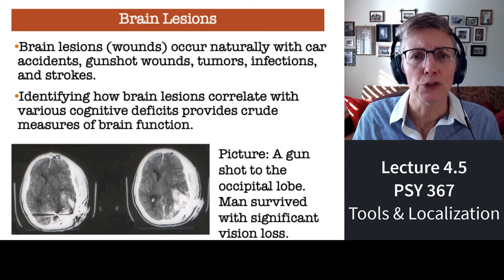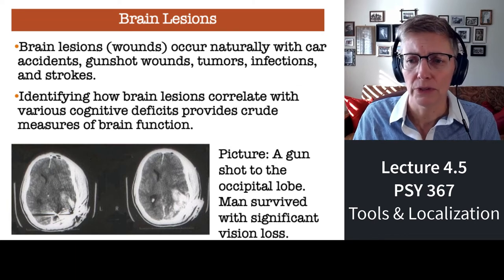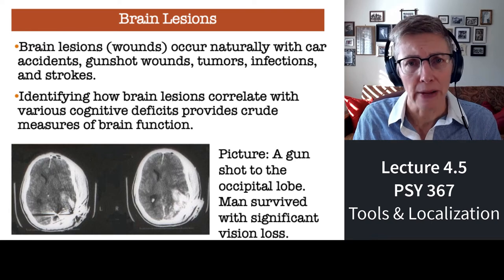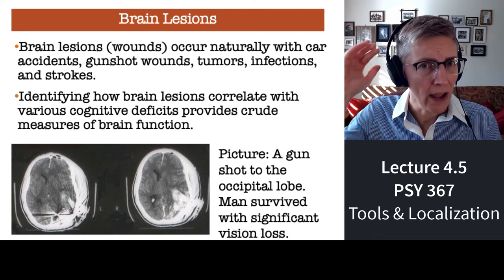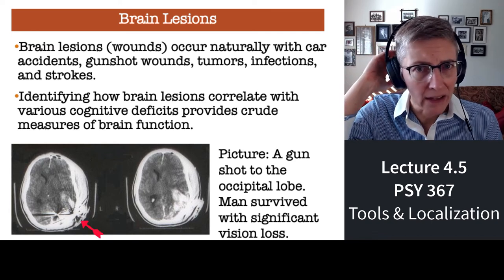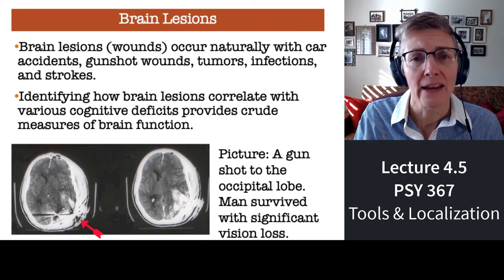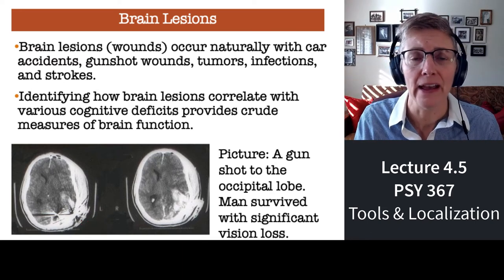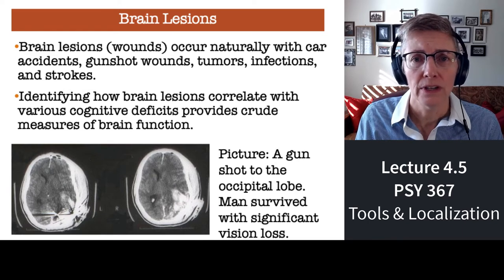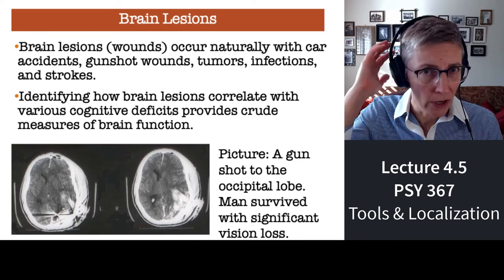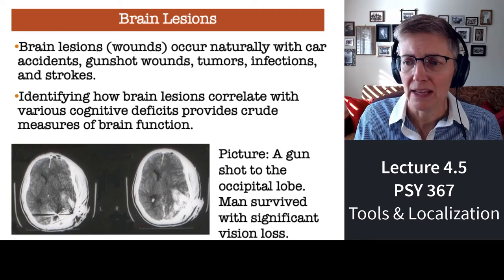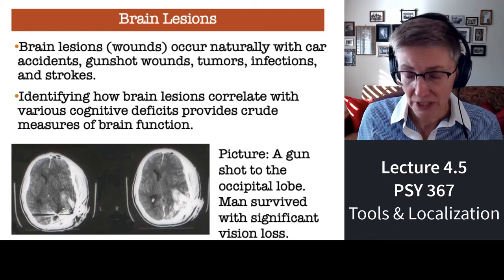In this slide, I'm showing you a picture of the brain of a man who was shot in the back in the occipital lobe. It damaged his occipital lobe, and as a result he had significant trouble with sight — with visual perception. So we know that the occipital lobe is involved in vision.